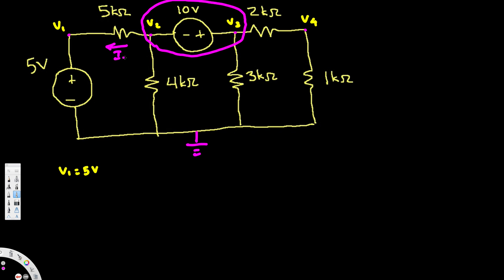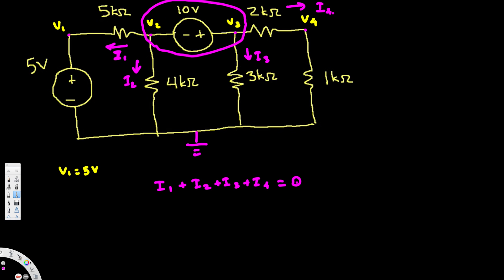Whenever current direction is not provided, we always assume it's leaving the node. Since we have a supernode, we assume all currents are leaving the supernode. Let's call them i1, i2, i3, and i4. According to Kirchhoff's law, i1 plus i2 plus i3 plus i4 is equal to zero.